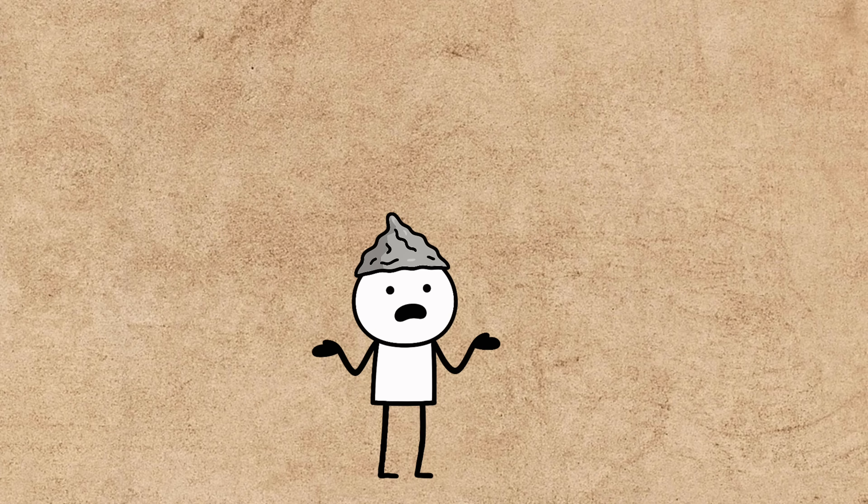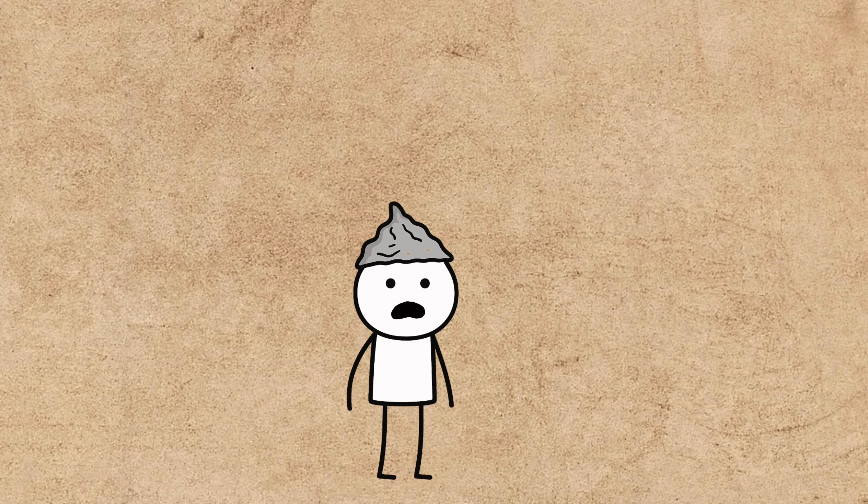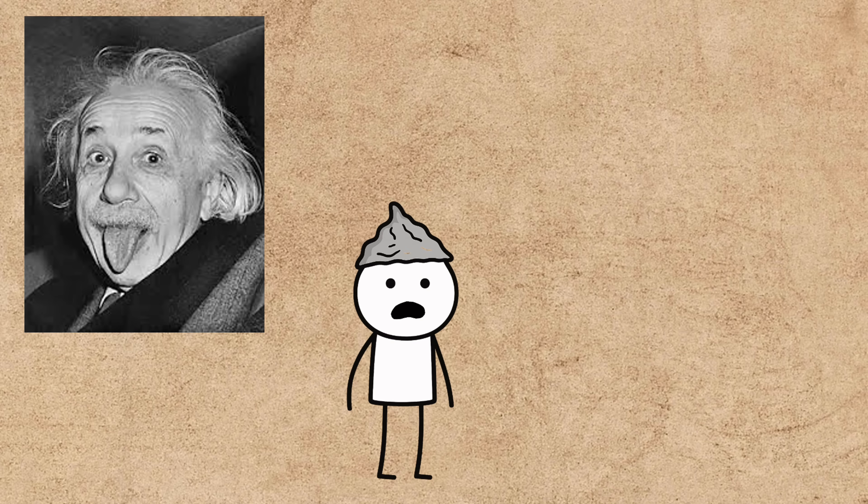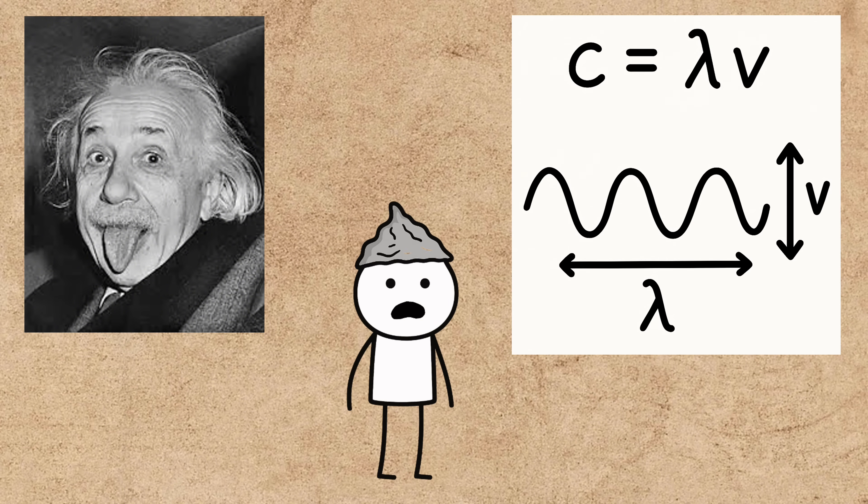They found no difference in the speed of light, no matter which way it was traveling. This null result became one of the most famous failed experiments in history and deeply confused scientists. The ether just wasn't there. It took Albert Einstein's theory of special relativity in 1905 to finally explain why. Light doesn't need a medium because its speed is a universal constant. Space is just empty.